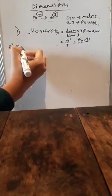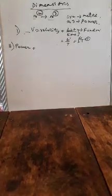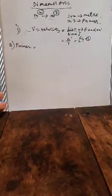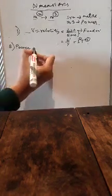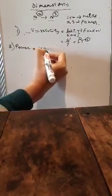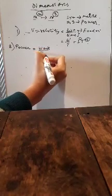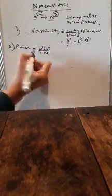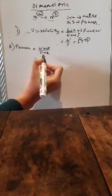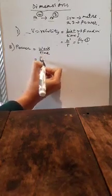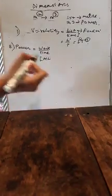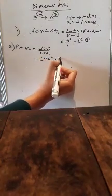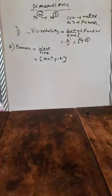So power means the rate of doing work. How much work you are doing with respect to time, that will be your power. So power will be equal to work by time. What was your formula of work, students? We have learned in the previous part. M L square T to the power minus 2 by T.